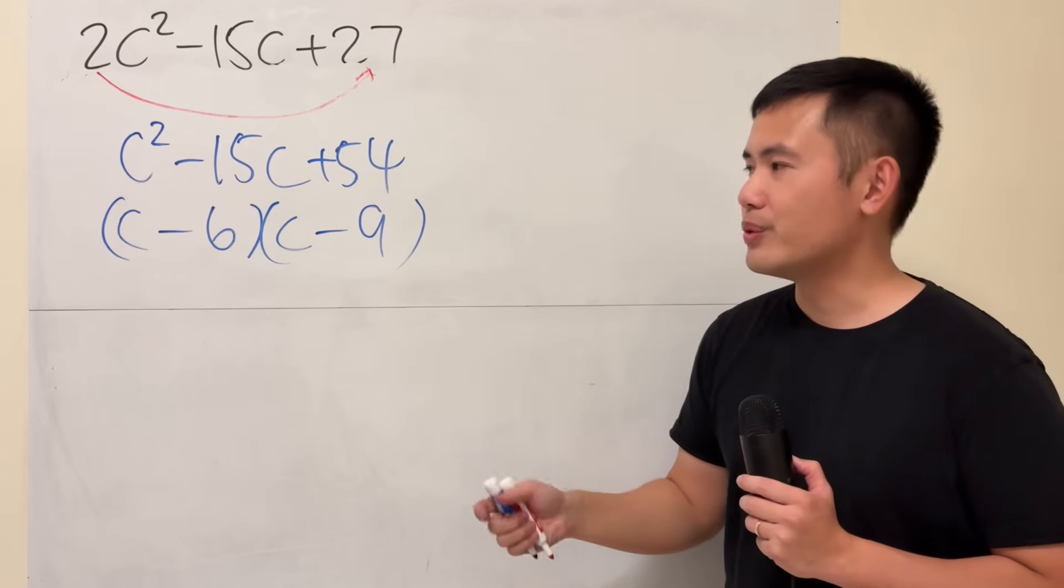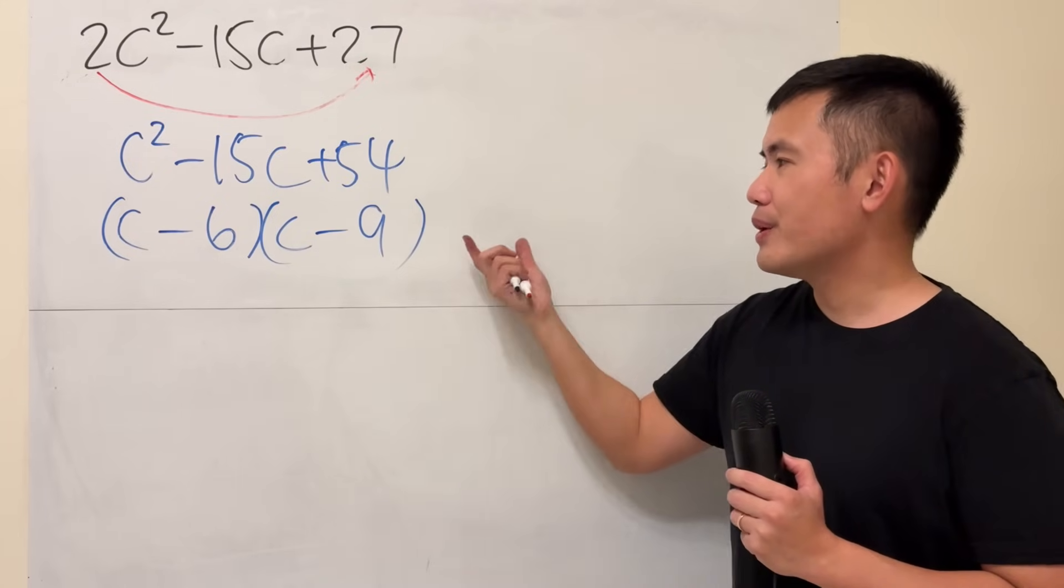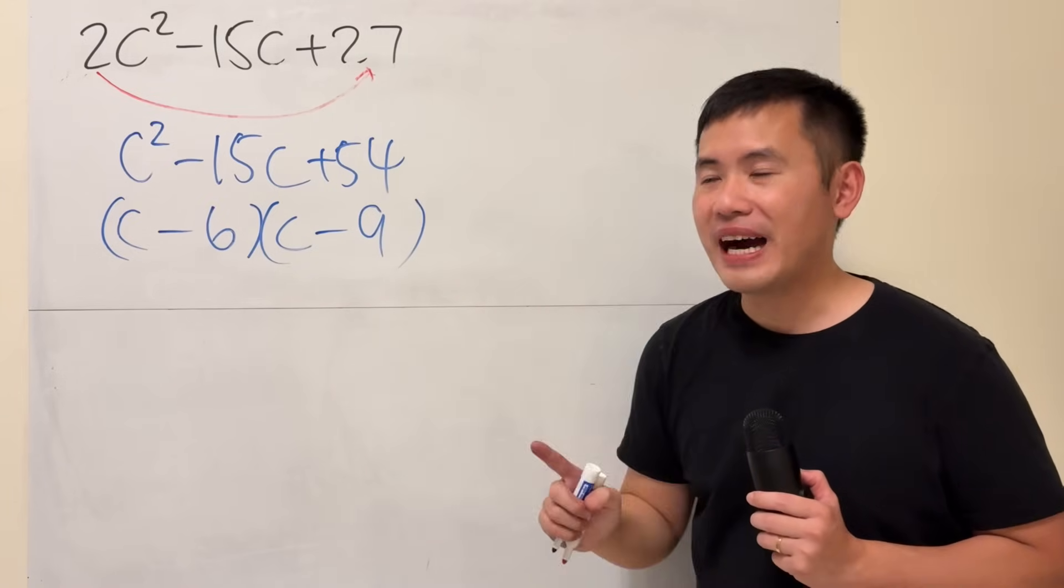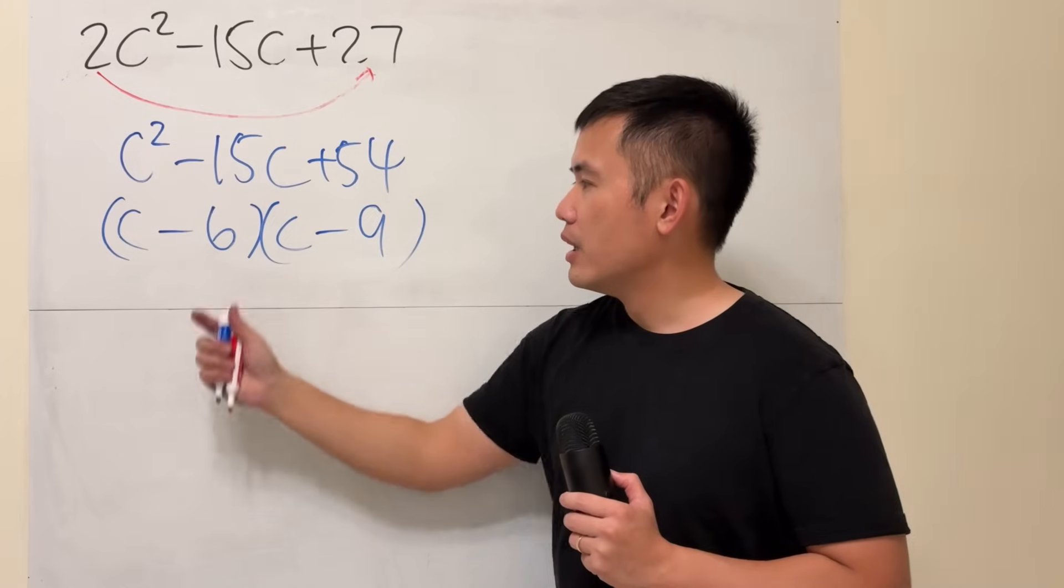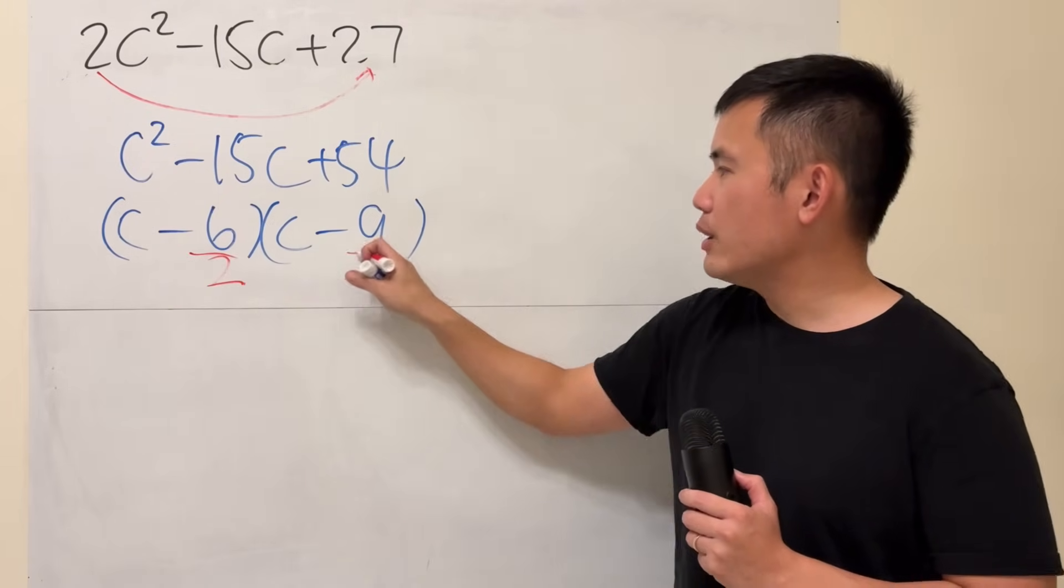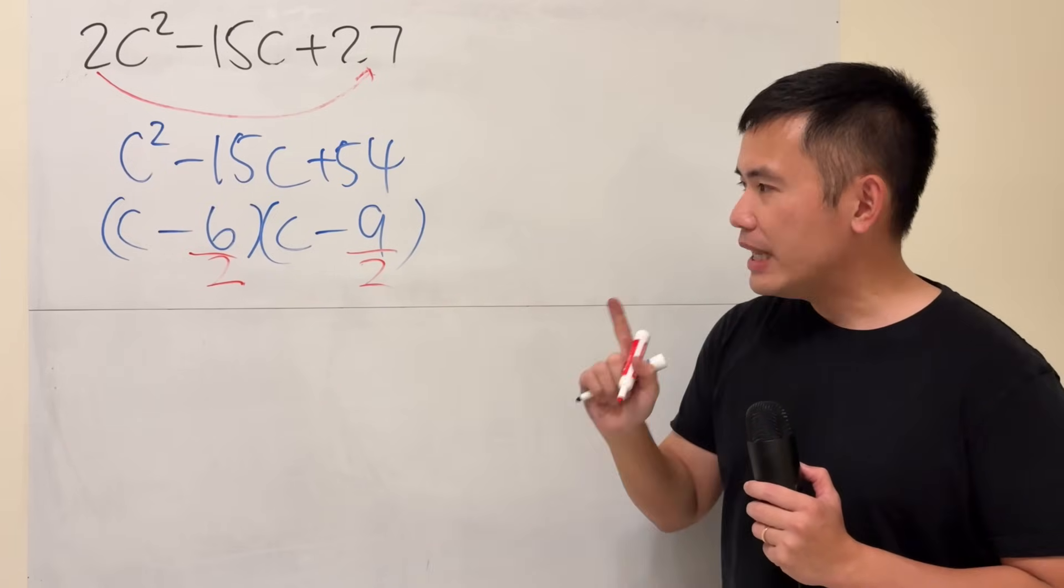Now, how can we continue though? Well, earlier we slide it. Now we are going to divide it, the 2. Look at this, look at that. We are going to divide this by 2, and also divide this by 2.